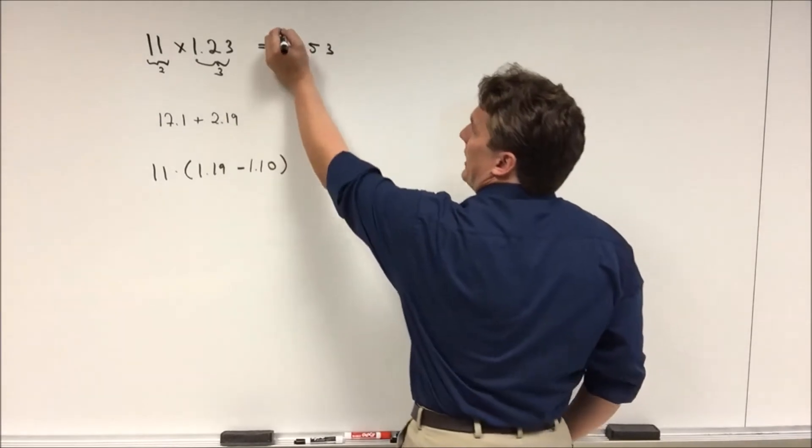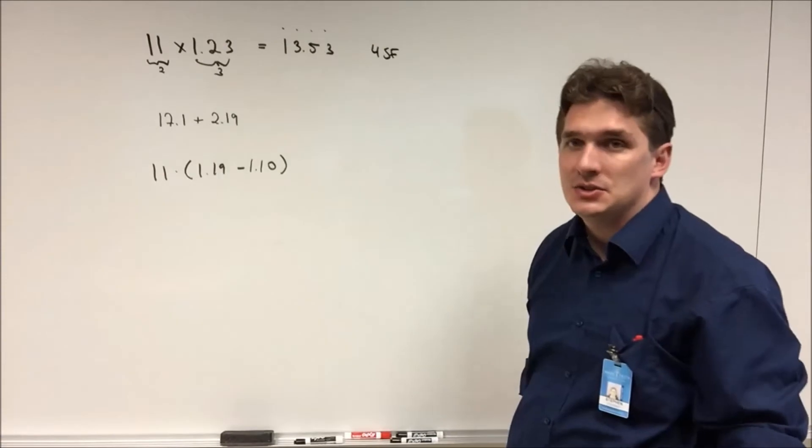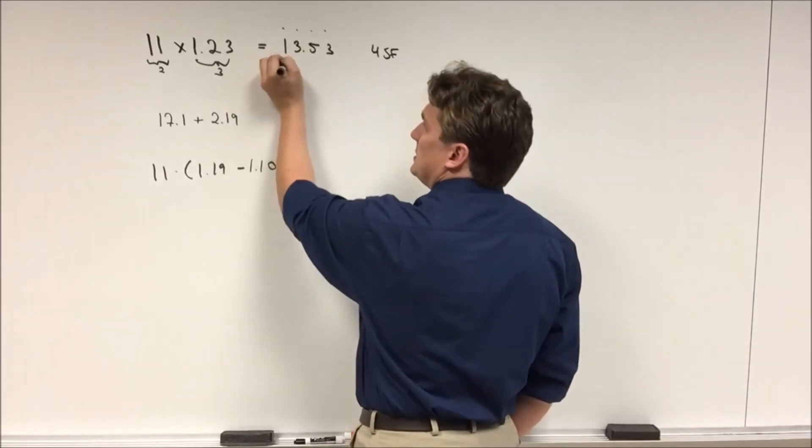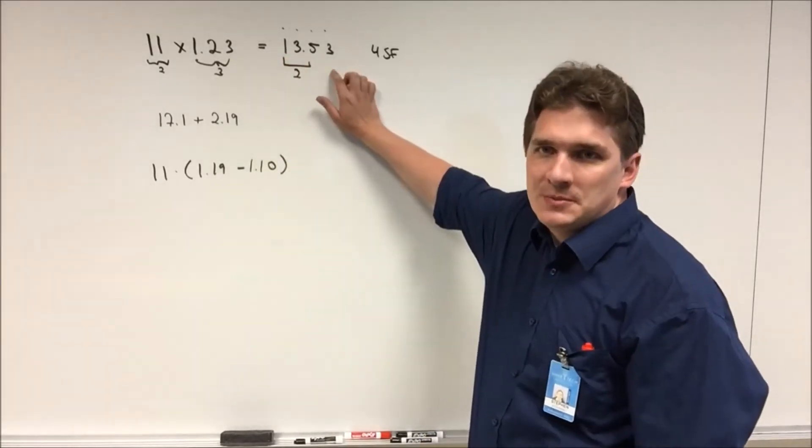So if you look at this number as read, we have one, two, three, four significant figures, and we need to cut this down to just two. So we're gonna start from the first significant number. We've got one, two. So anything beyond this three is too much precision.